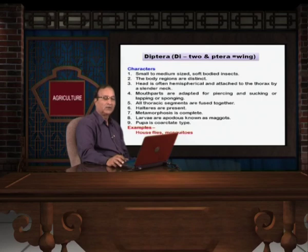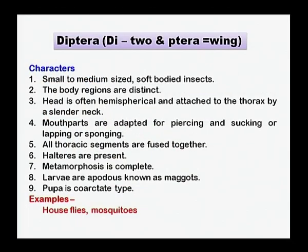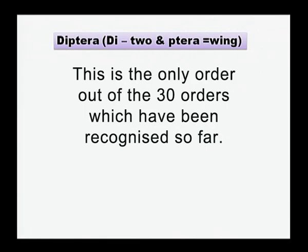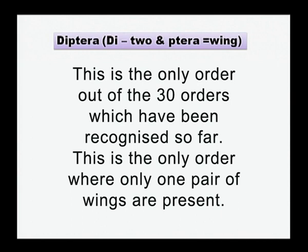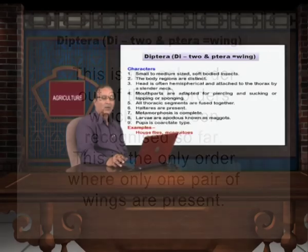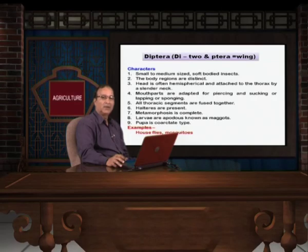Coming to the order Diptera, this is one of the important orders of agricultural importance. Di stands for two and ptera means wings. This is the only order, out of the 30 orders recognized so far, where only one pair of wings is present — one pair is reduced. That is why the name Diptera has been given.